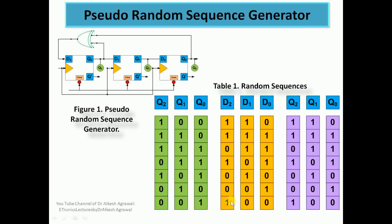Again the XOR of Q2=0 and Q0=1 gives 1, making input D2=1. Q2 goes to D1 and Q1 goes to D0, so input conditions are 100. After the clock the register holds 100 — we are back to the start. So the state sequence is: 100 → 110 → 111 → 011 → 101 → 010 → 001 → back to 100. The sequence is unpredictable the first time and then repeats, which is why it is called a pseudo-random sequence generator.